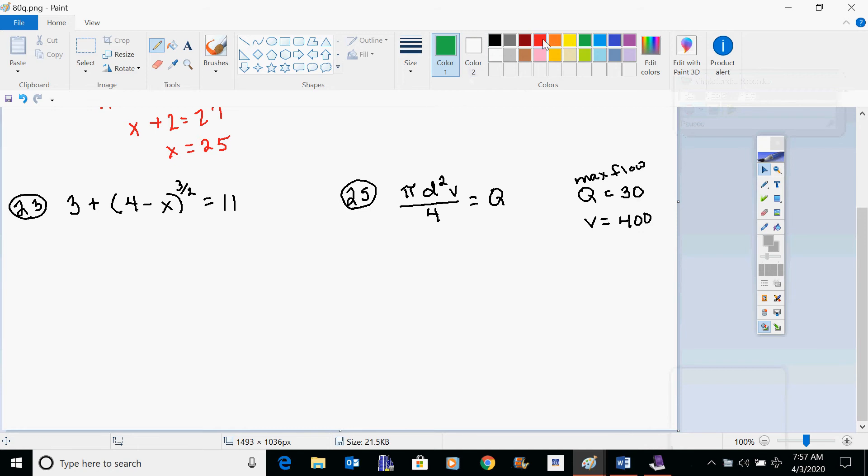All right, this one's the same issue except that you have to isolate this expression first. So to do that, you'll take away 3 from both sides. That'll give you an 8 over here and a 4 minus x to the 3 halves power here. So once again, you're taking power to a power. You're going to multiply times the reciprocal, 2 thirds power.